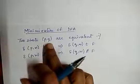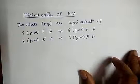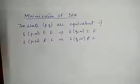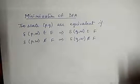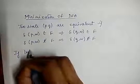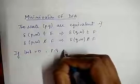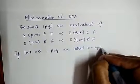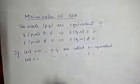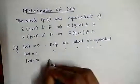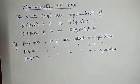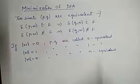For the minimization of DFA we create equivalence relationships, starting from zero equivalence up to n equivalences, until the last two equivalences remain the same. If the length of input W is equal to 0, then P and Q are called zero-equivalent. If the length of W equals 1, then P and Q are called 1-equivalent. Using these properties we can minimize a DFA by replacing two equivalent states into a single state.